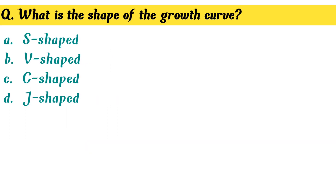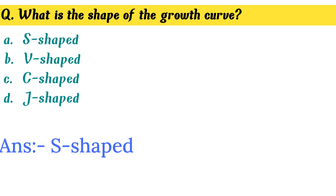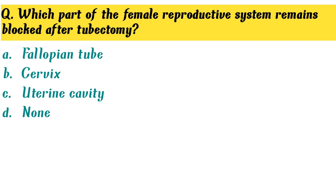What is the shape of the growth curve? Option A. S-shaped is the correct answer. Which part of the female reproductive system remains blocked after tubectomy?